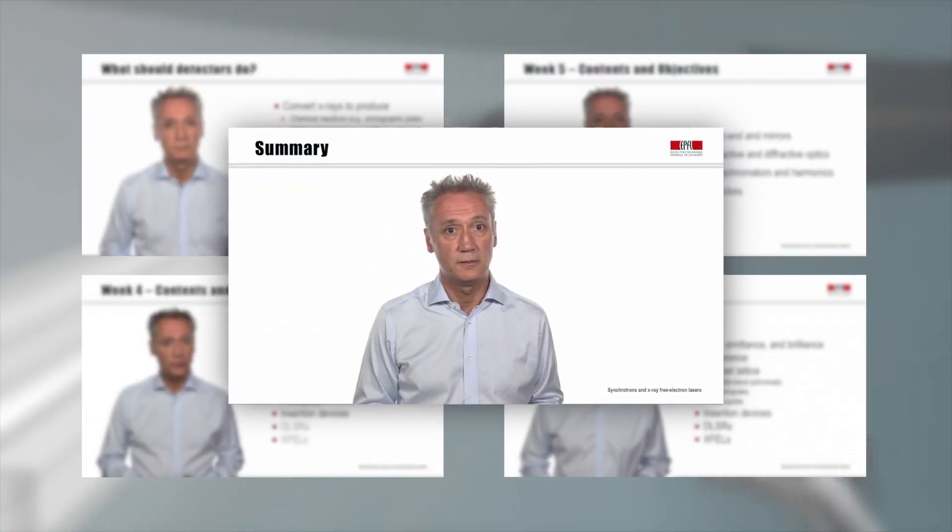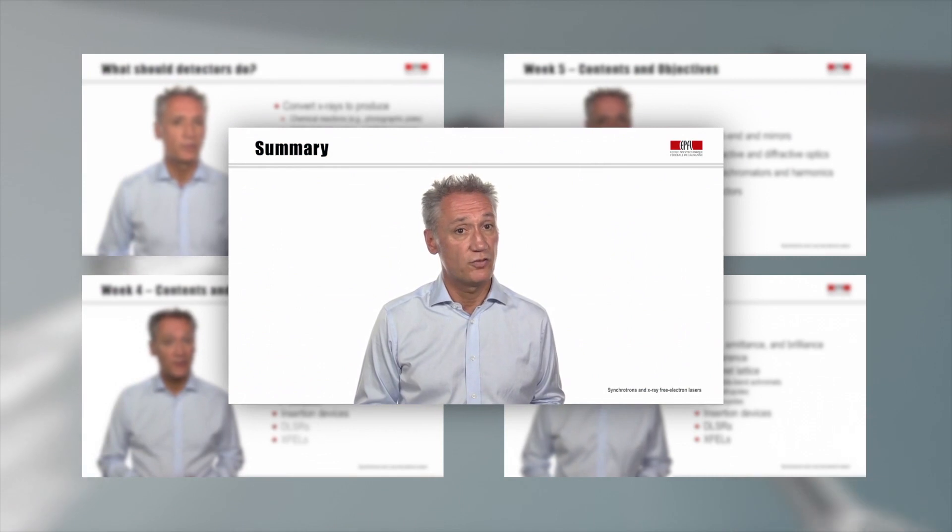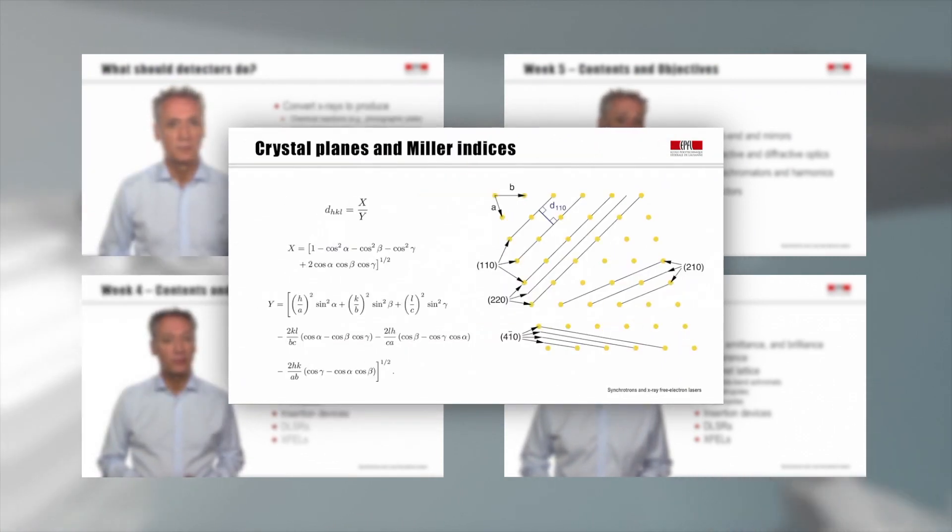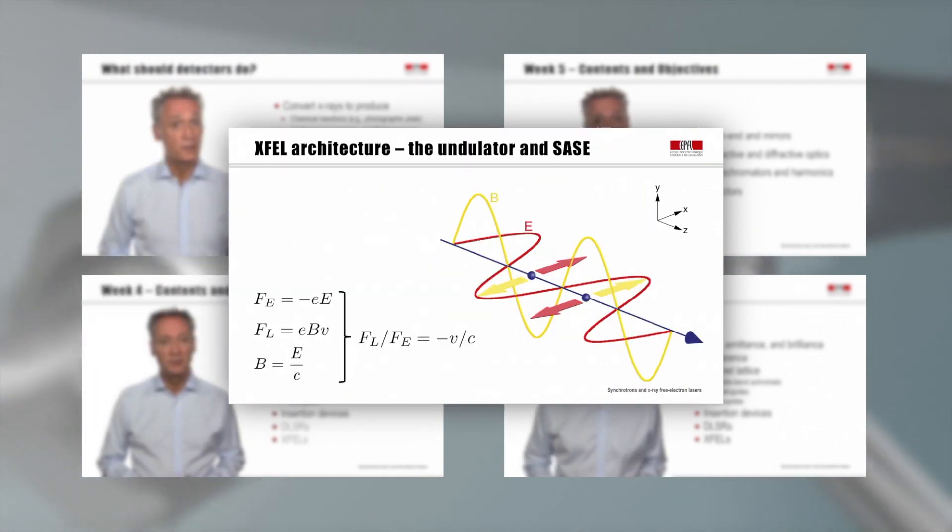My name is Phil Wilmot, titular professor of physics at the University of Zurich and science coordinator at the Swiss Light Source synchrotron facility at the Paul Scherrer Institute in Switzerland.